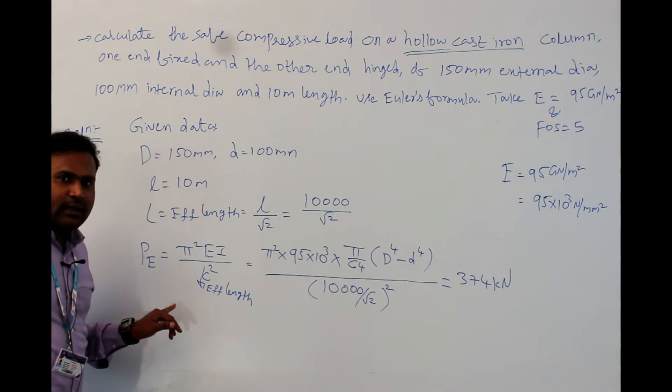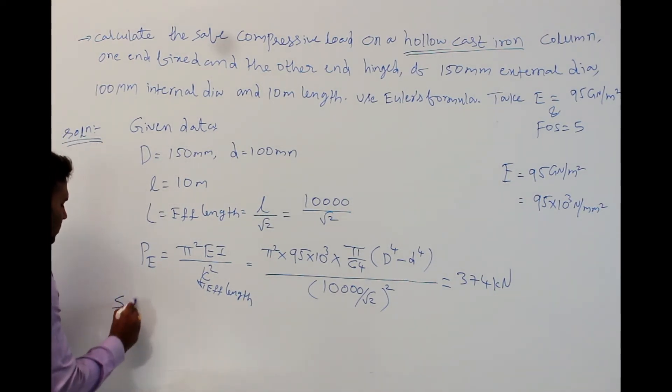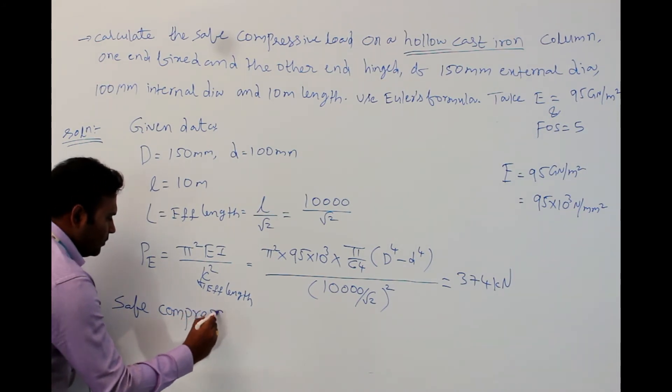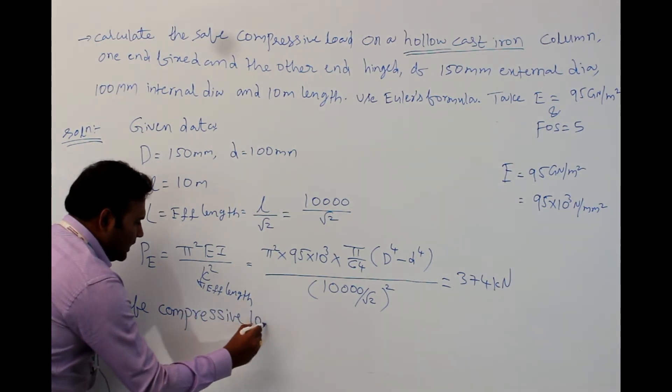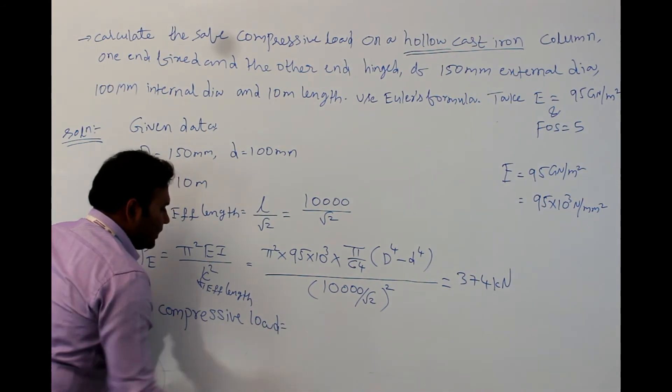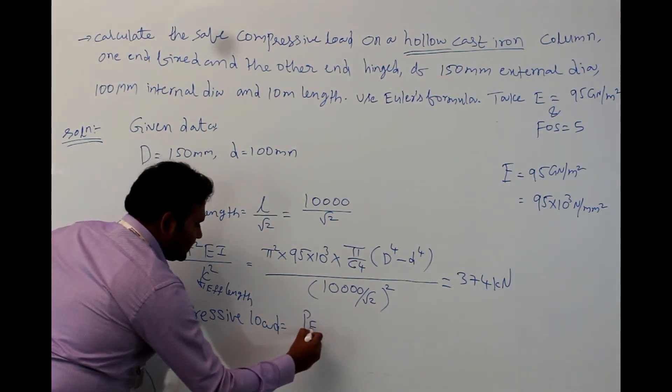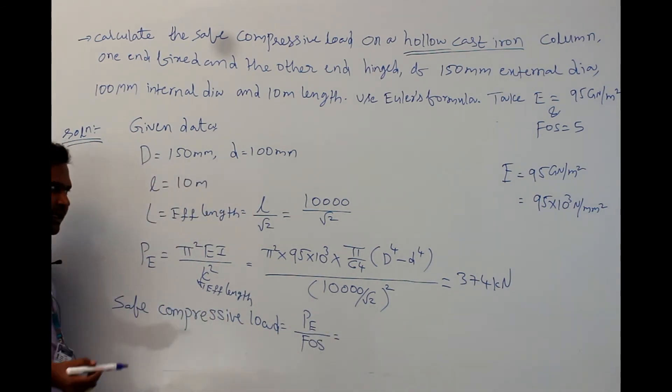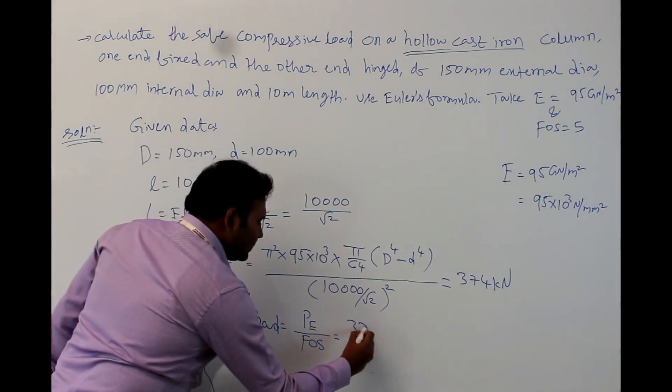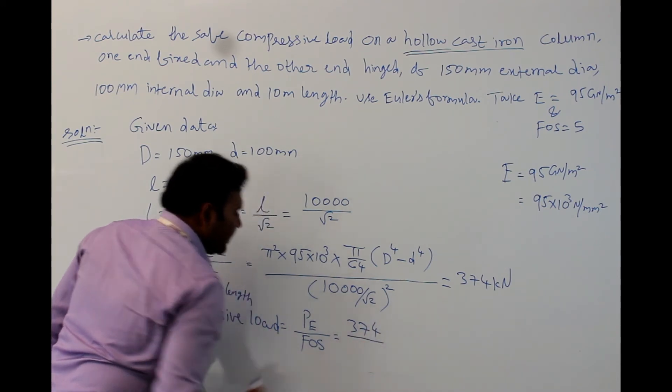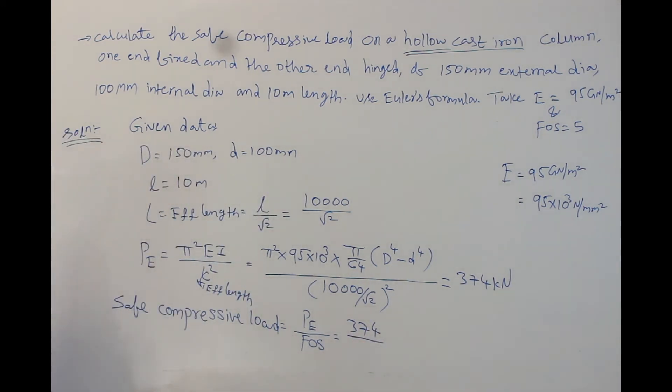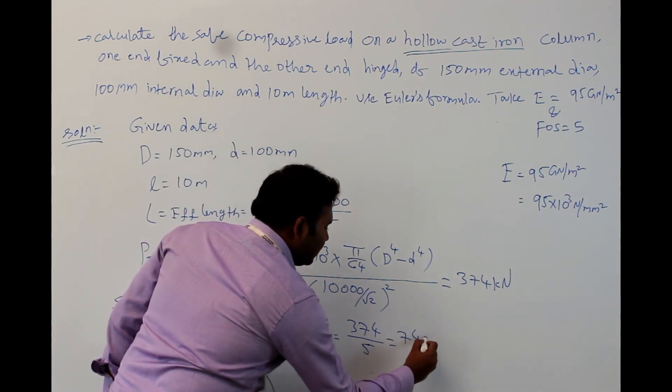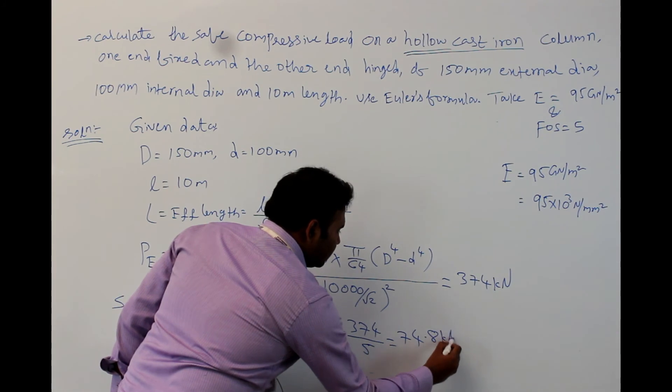But here, we need to find out the safe compressive load. Safe compressive load is nothing but Euler's load carrying capacity divided by factor of safety. So, Euler's load carrying capacity, we have already calculated, it is 374 divided by factor of safety which is 5. Therefore, the value comes to be 74.8 kilonewton.